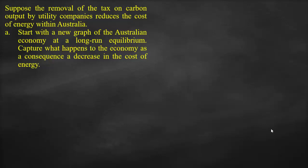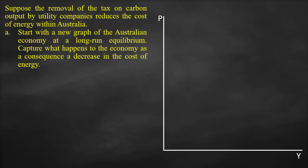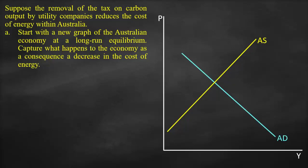We'll start by drawing our graph. We have our y-axis which is the price, and our x-axis which is the output. This is our short-run aggregate supply curve which is upward sloping, this is our downward aggregate demand curve, and this is our long-run aggregate supply curve which is the vertical line. All three curves intersect at the same point, which is point A, giving us our potential output — full employment output — Y-star, and our price level P1.